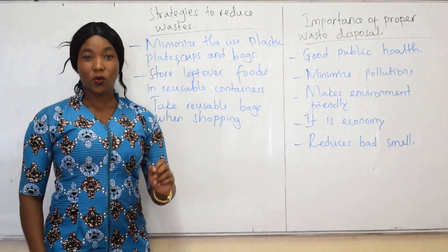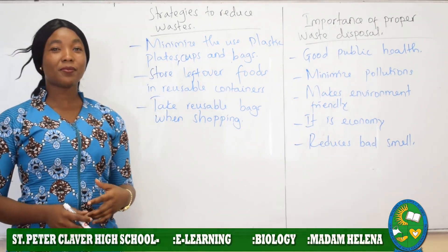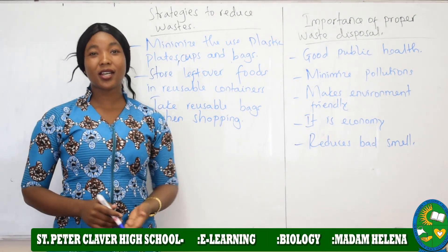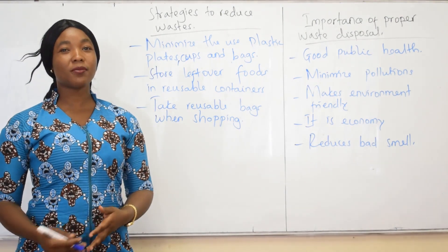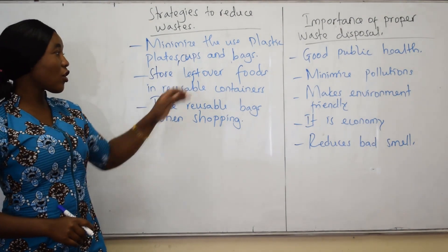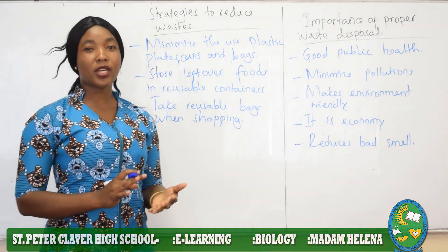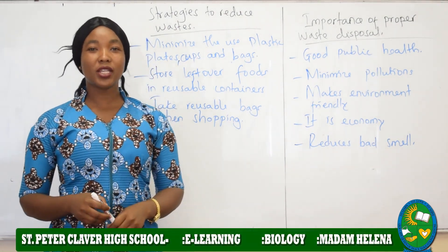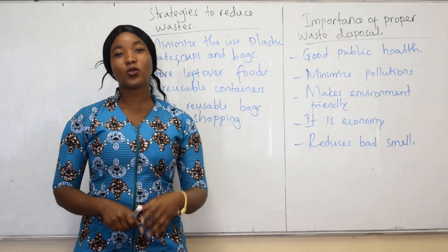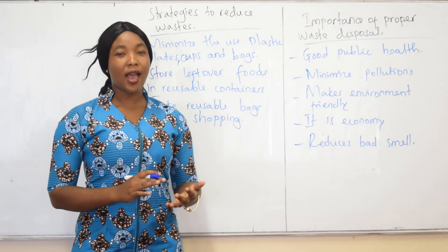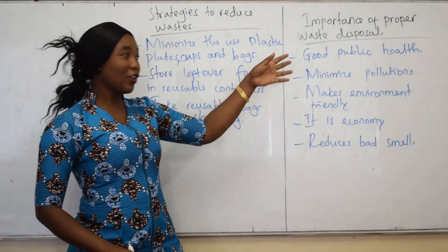There are strategies to reduce waste in the environment. Number one, minimize the use of plastic bags, plastic plates, and plastic cups. Instead of using plastic cups or plastic bags, use normal cups and normal plates so that after finishing using them, you can wash them and use them again. Also, store leftover food in reusable containers instead of throwing it away. And lastly, take reusable bags when shopping — go with your basket or any other useful bag instead of taking plastic bags.